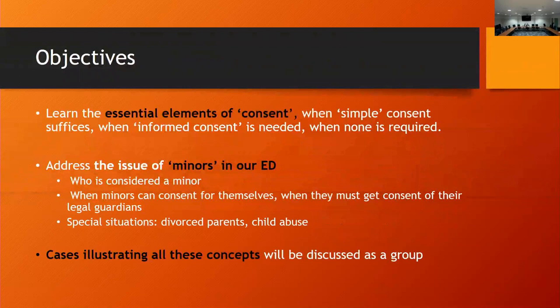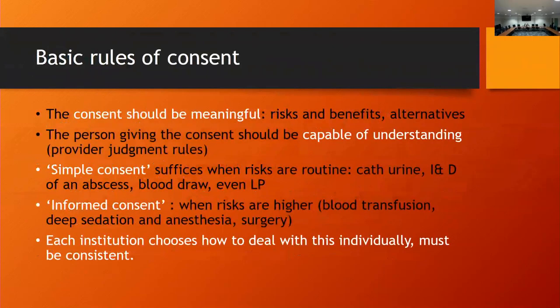One is to go over what comprises a reasonable consent. Two is the specific subset of people we deal with — our majority are minors — which ones can give consent, who can't, and all the permutations of that theme. When you don't have parents there, but you have various other relatives, friends, divorced parents, or all these situations, we're often stuck in the middle and don't know what to do.